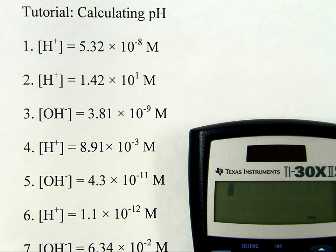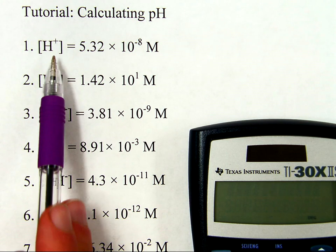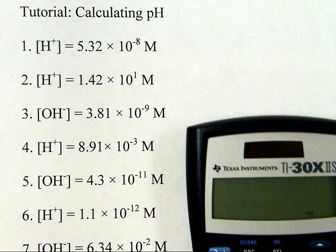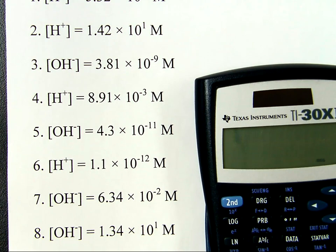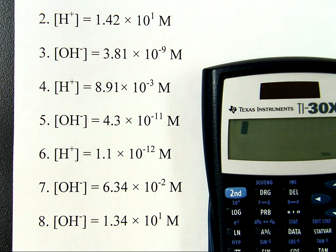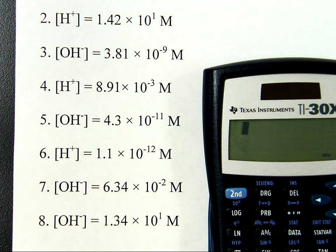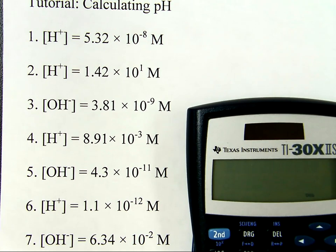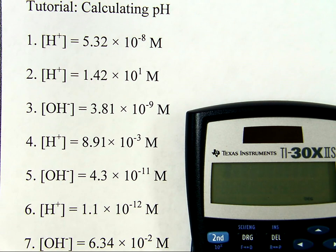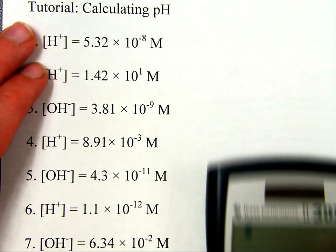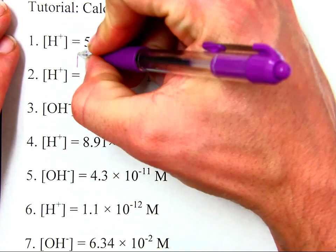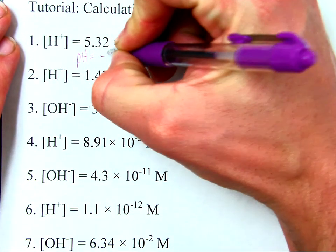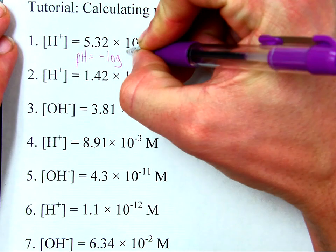I'm going to show you some examples, probably these first three. And then, after that, I will give you some time to work out the rest of these, and then I'll put up the answer key at the end so you can see if you did it right or not. Let's begin with the first one as an example. How do you go about calculating pH? Simply, the formula is pH is equal to negative log of hydrogen ion concentration.